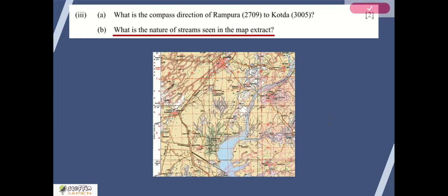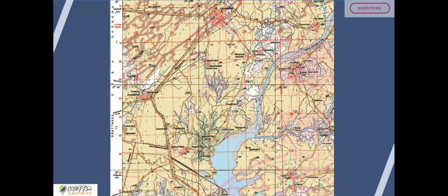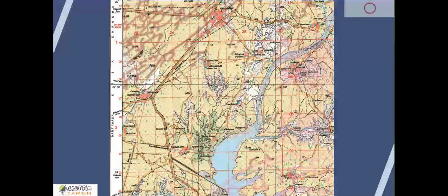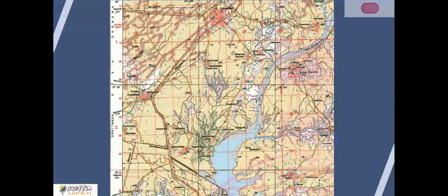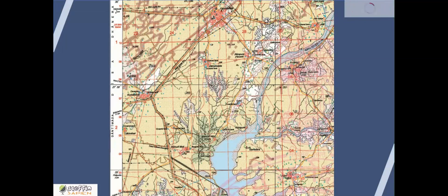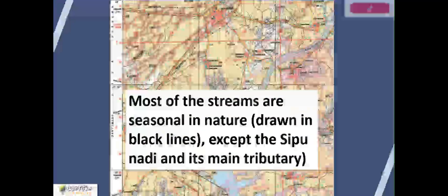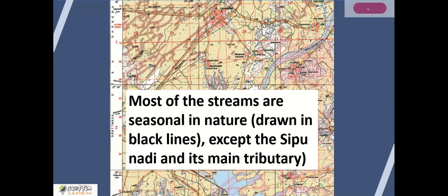Second part of the question: What is the nature of streams seen in the map extract? We can see both blue lines as well as black lines. Black lines indicate seasonal streams and the blue ones are perennial. But the Sipu River is a dry stream with a perennial water channel. Most of the streams are seasonal nature drawn in black lines, except the Sipu Nadi and its main tributary. Both are dry or seasonal river with perennial water channel.